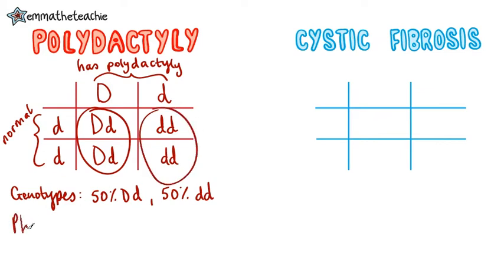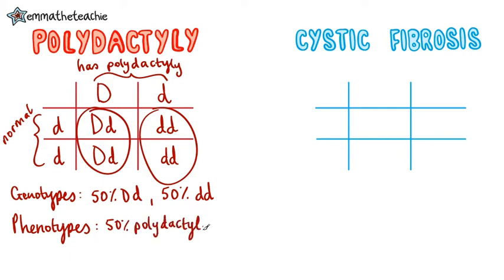The phenotypes, or the physical characteristics, are then 50% polydactyl because they've got the capital dominant allele, and 50% normal. As a ratio, this is one to one.